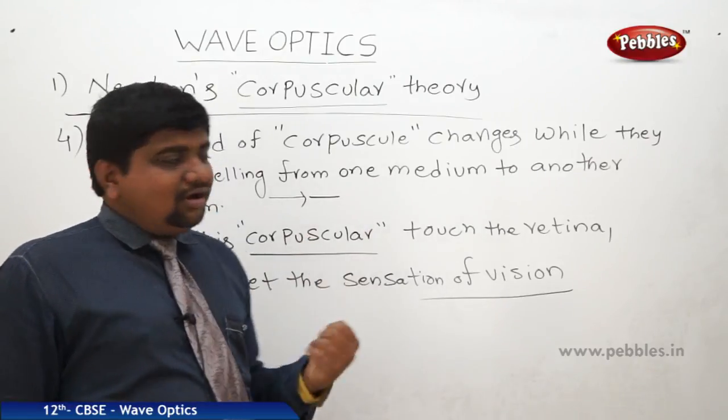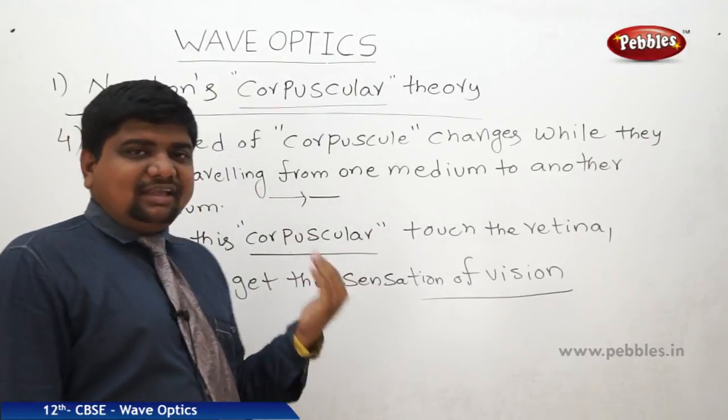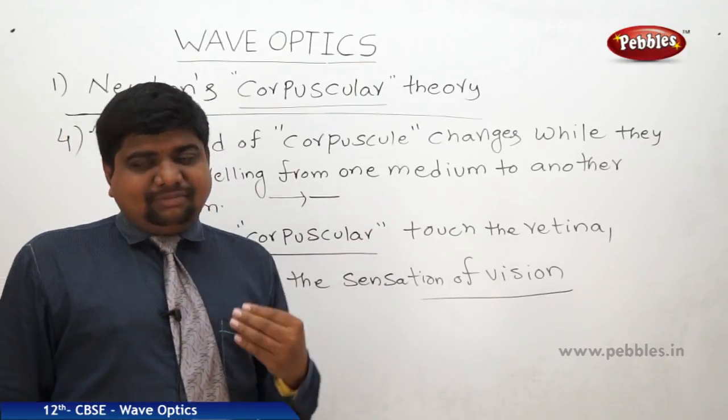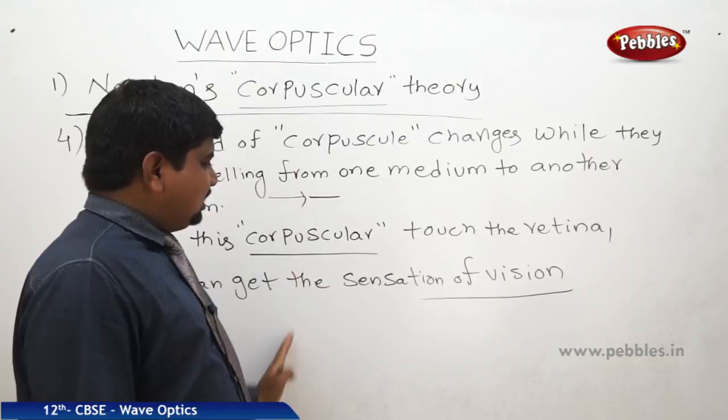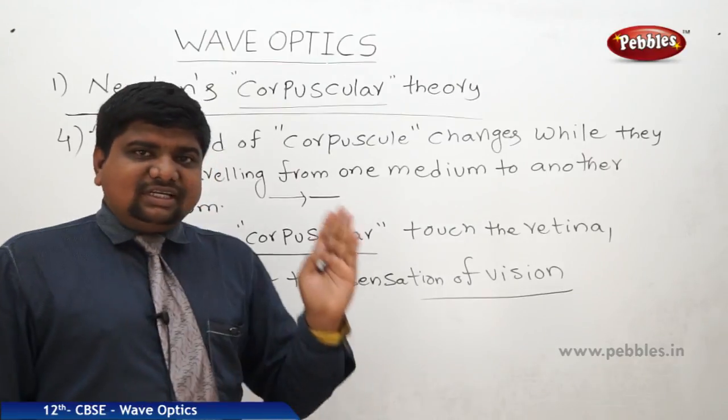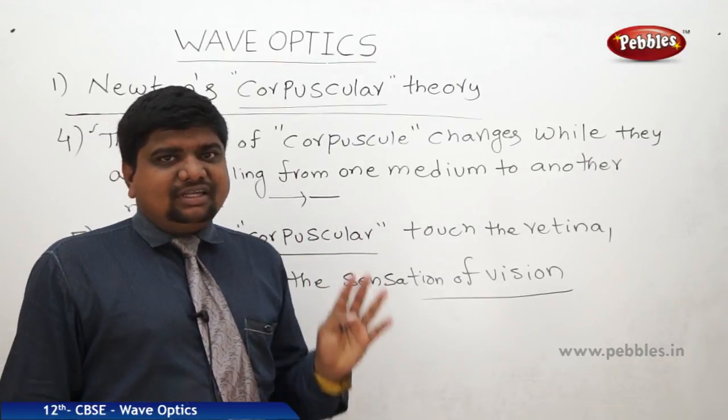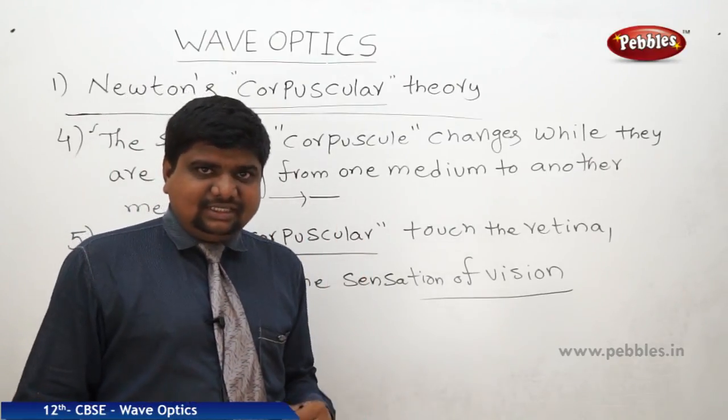After Newton, Christian Huygens developed his theory and concluded what the wave nature of light is.